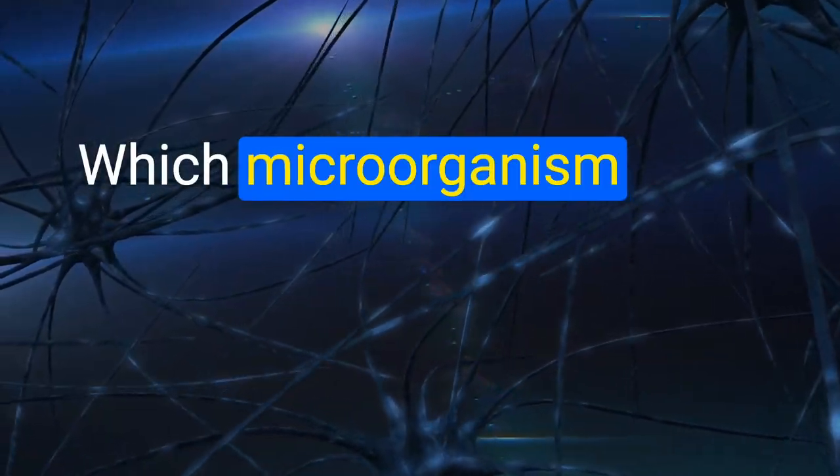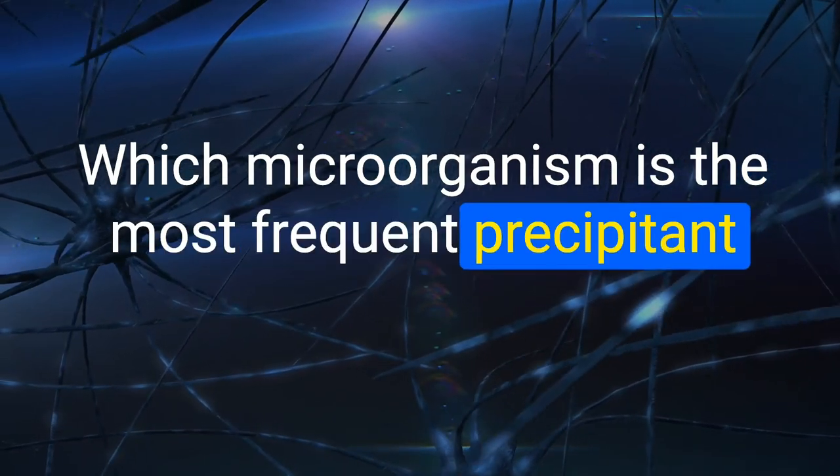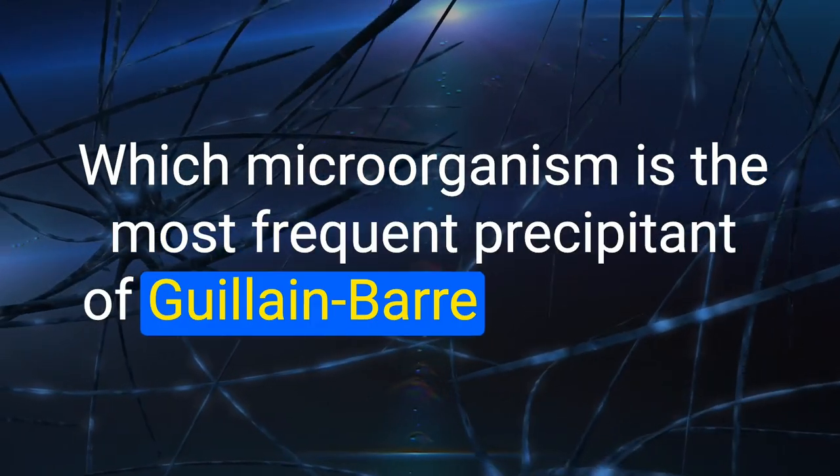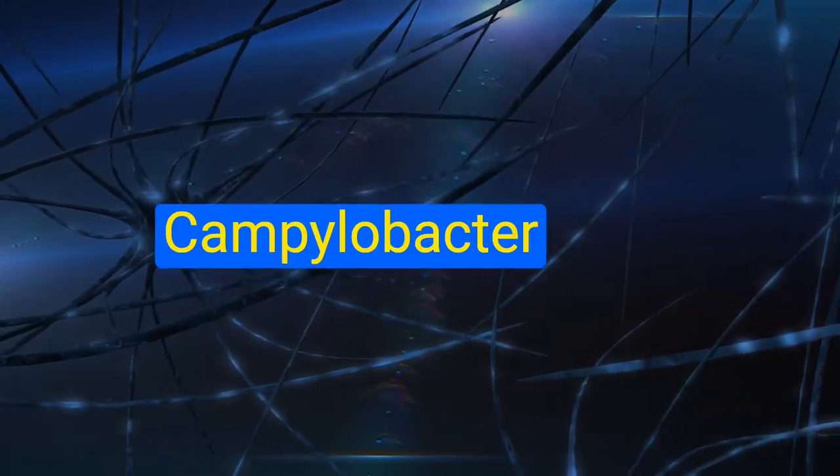102. Which microorganism is the most frequent precipitant of Guillain-Barré syndrome? Campylobacter jejuni.